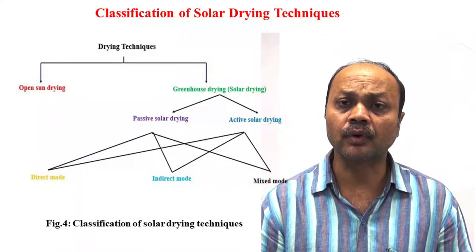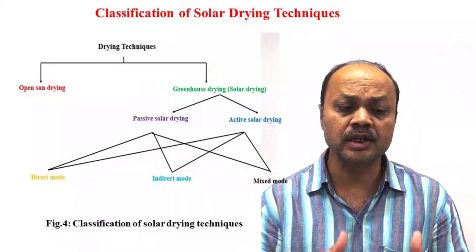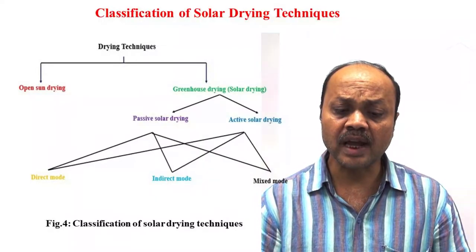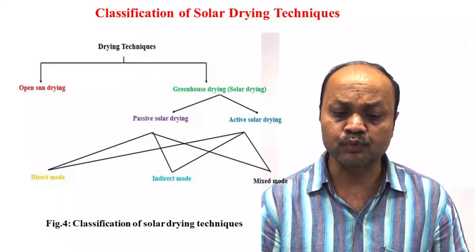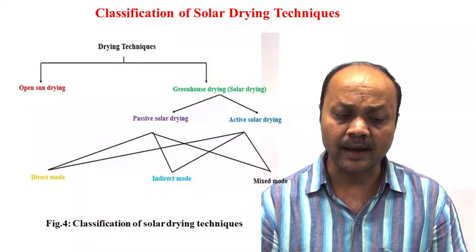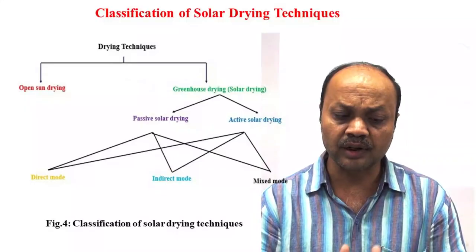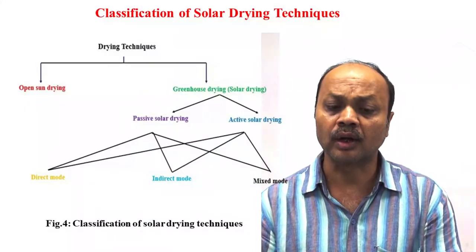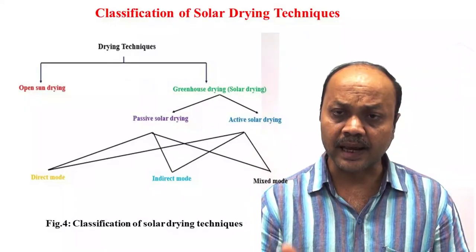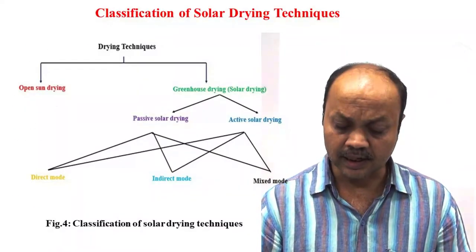This is the classification of solar drying techniques. The basic classification is open sun drying and greenhouse drying. In greenhouse drying, there are two types: passive solar drying and active solar drying. Passive solar drying can be direct mode, indirect mode, or mixed mode. The same is the case with active — active can be direct, indirect, or mixed mode. We will discuss each one by one.